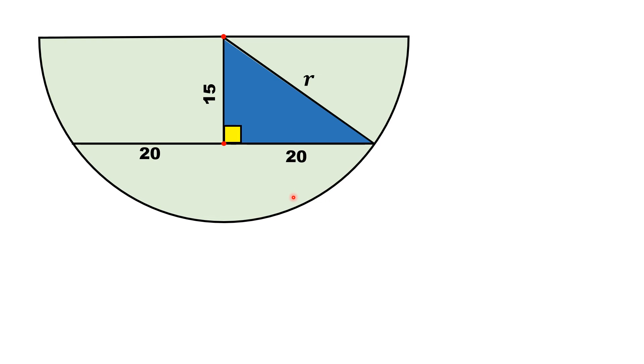We can use Pythagorean theorem on this right triangle. According to Pythagorean theorem, r square is equal to 15 square plus 20 square. From here, r square is equal to 225 plus 400. And from here, r square is 625.